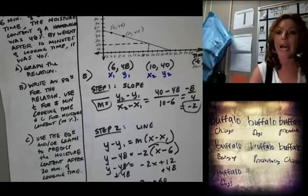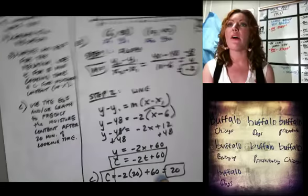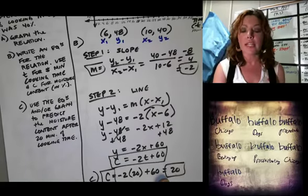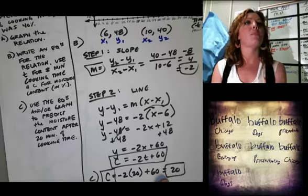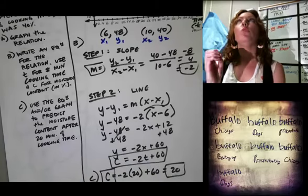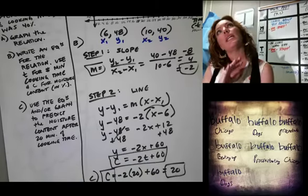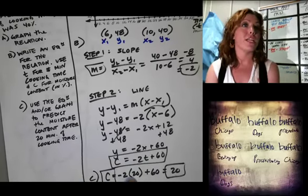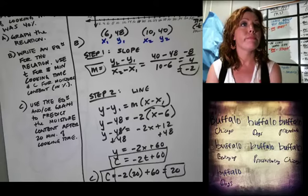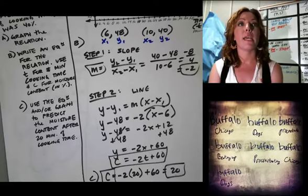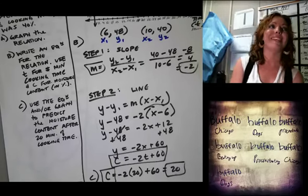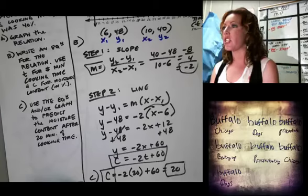Depending on how accurate your graph is, you'll be really close or not so close. That's why you tend to be more mathematically accurate if you use the equation. I would say err on the side of caution and use the equation.